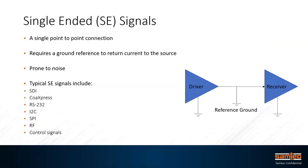We also need to look at what type of signals we have. There are single-ended signals and differential. Single-ended signals are a single point-to-point connection requiring a ground reference to return current to the source, and they're prone to noise. Single-ended signals are very prevalent in a number of embedded designs. A number of standard protocols across the embedded ecosystem — SDI, PCIe, RS-232, I²C, SPI, RF, control signals — all take advantage of single-ended solutions.